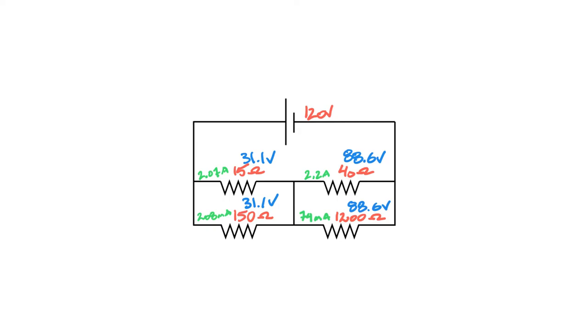So what we need to do now is look at these nodes, because they are going to be very important when we're trying to determine what the current is through this jumper. So let's get our nodes drawn in. There's a node there and a node there.